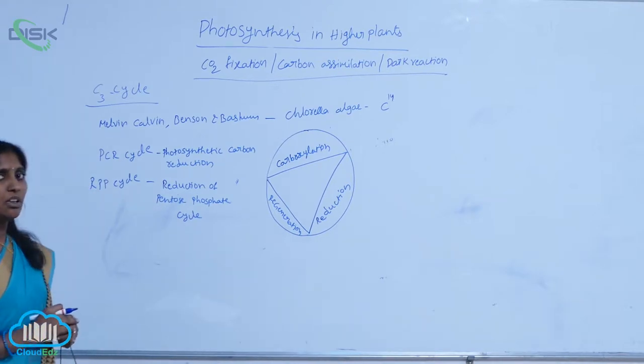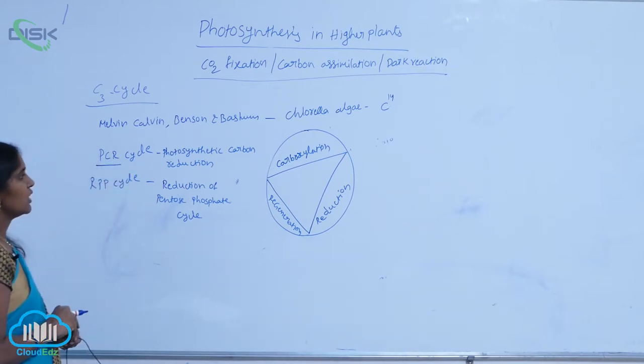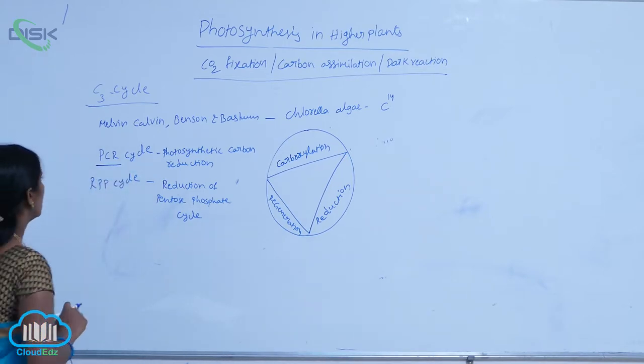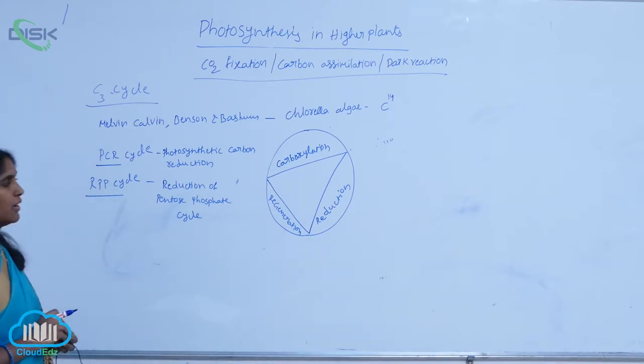The C3 cycle is also called the PCR cycle (photosynthetic carbon reduction cycle) and RPP cycle (reduction of pentose phosphate cycle).